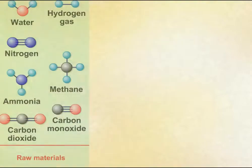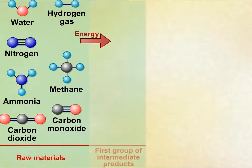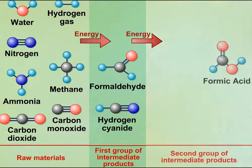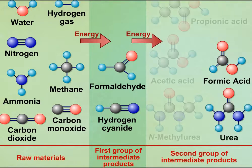When the water was analyzed after one week, they found simple carbon compounds such as formaldehyde and hydrogen cyanide. These compounds then combined to produce formic acid, urea, and amino acids.